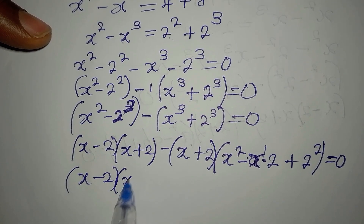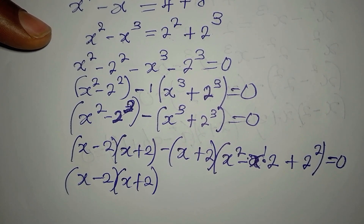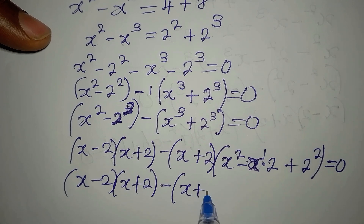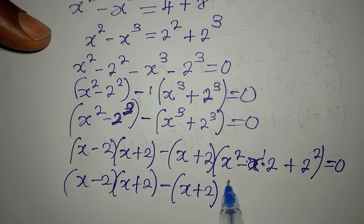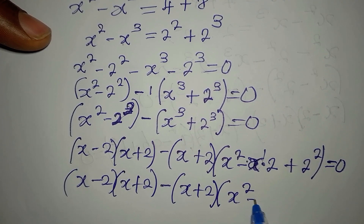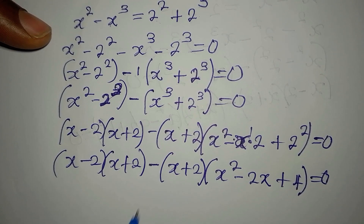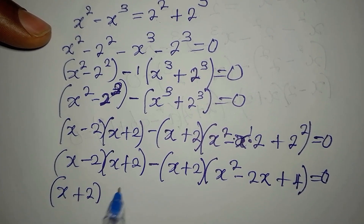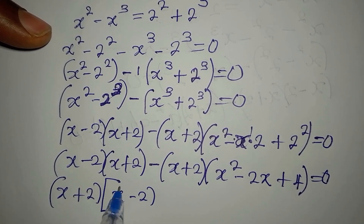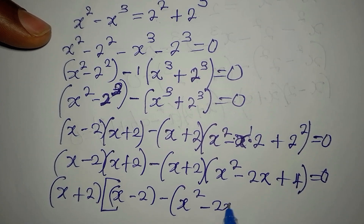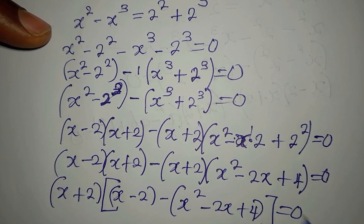So we have x minus 2 into x plus 2, minus x plus 2 into x squared minus 2x plus 4. We can see that x plus 2 is a common factor here and there, so it comes out as the common factor. We then have x plus 2 times the quantity x minus 2 minus the whole of x squared minus 2x plus 4, equated to zero.